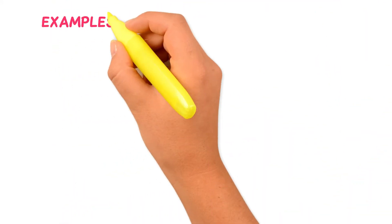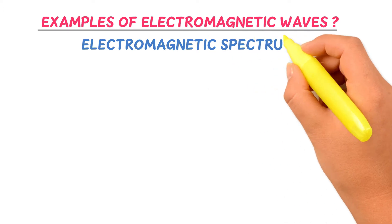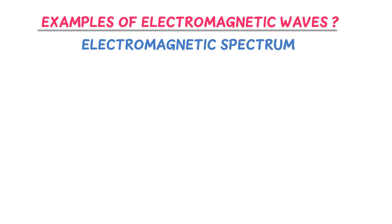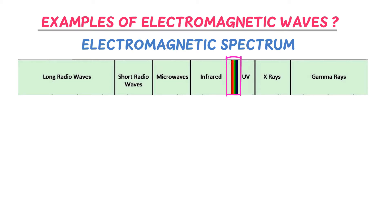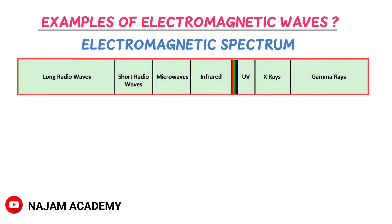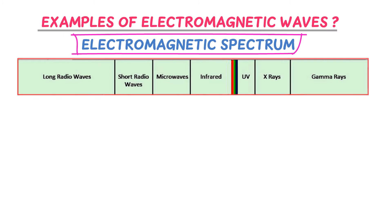Now, what are the different examples of electromagnetic waves, or what is the electromagnetic spectrum? The different examples are: radio waves, microwaves, infrared, visible light, ultraviolet (UV), X-rays, and gamma rays. They are all electromagnetic waves or EM waves, and this group is also commonly known as the electromagnetic spectrum.